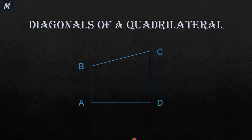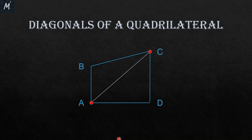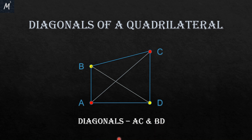I stress upon two opposite vertices. So in this quadrilateral a, b, c, d — two opposite vertices are a and c. So the line segment joining these two vertices is AC. So AC is the first diagonal of the quadrilateral. B and D are the other pair of opposite vertices, so BD is the second diagonal of the quadrilateral.